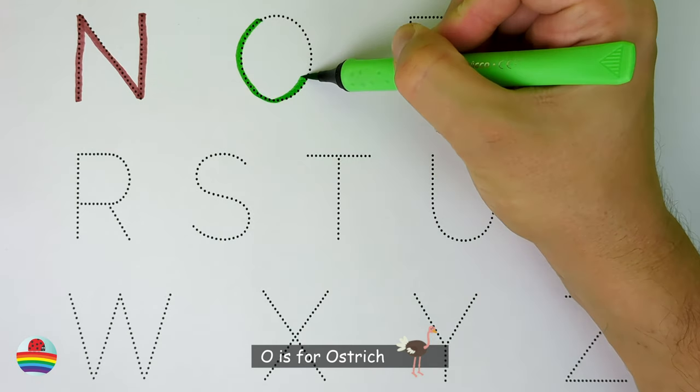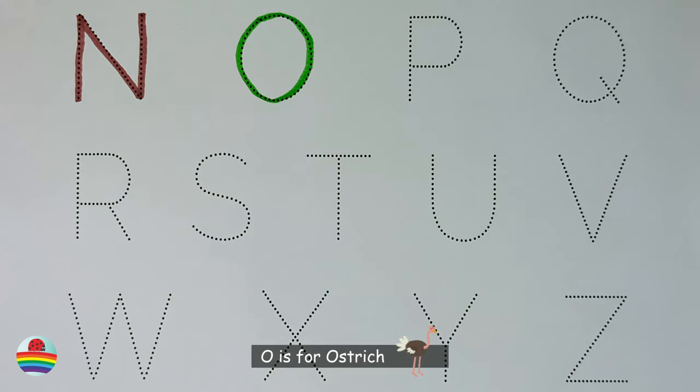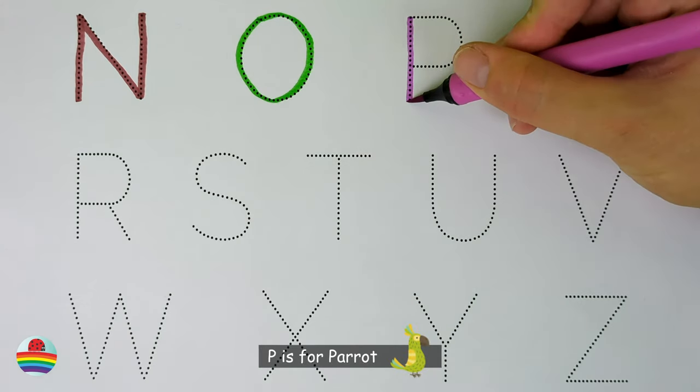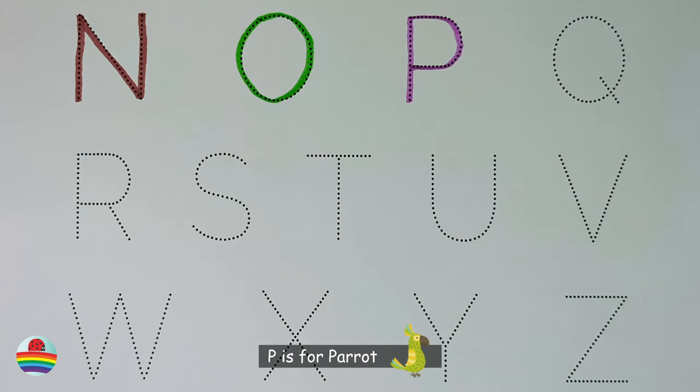O. O is for ostrich. P. P is for parrot.